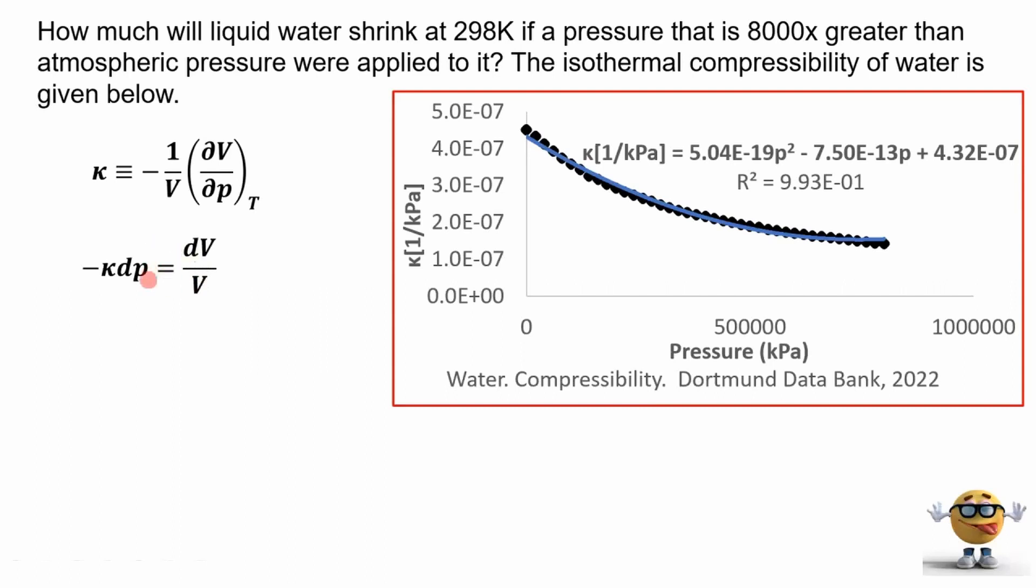And the reason we did this is something called separation of variables. So kappa is an equation and kappa is in terms of p. So we have everything in terms of p, one variable on the left, and everything in terms of v, one variable on the right. So we separated our variables.